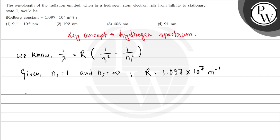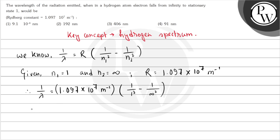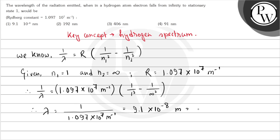So finally we have 1 by lambda is equal to 1.097 into 10 to the power 7 meter inverse into 1 by 1 squared minus 1 by infinity squared, that will be 0. So this becomes 1, and you get lambda is equal to 1 by 1.097 into 10 to the power 7 meter inverse, which gives 9.10 into 10 to the power minus 8 meter, and that is equal to 91 nanometer.